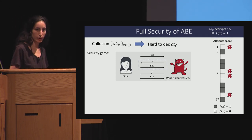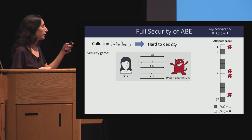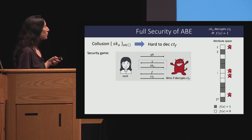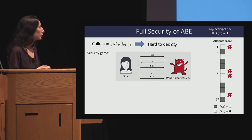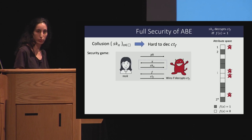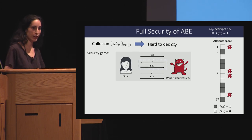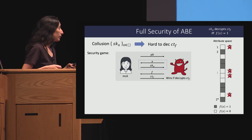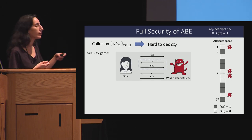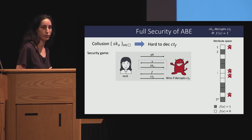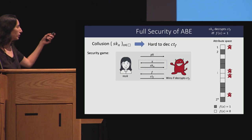The game goes as follows. First, the challenger sends the public key to the adversary. Then there is a query phase — each time the adversary can send some attribute x, and the challenger generates a key for that attribute and sends it back. They can repeat this multiple times. At some point the adversary asks for a challenge ciphertext by specifying some policy f, and the challenger encrypts the message. The goal of the adversary is to decrypt the message. We only care about adversaries that query for non-authorized keys, since that is the only case where we need to guarantee security.